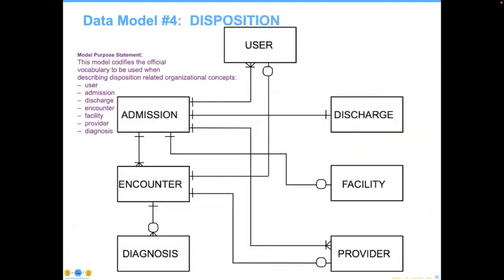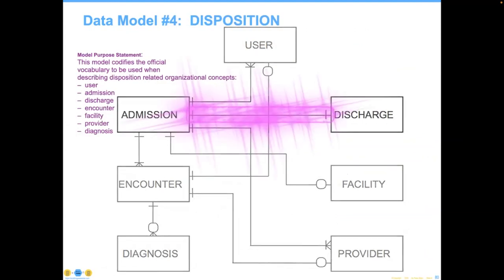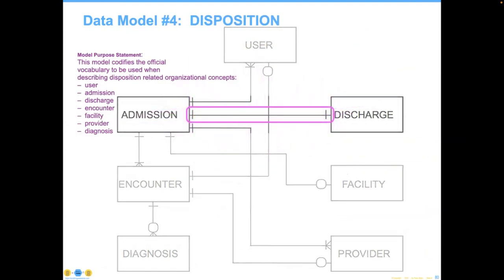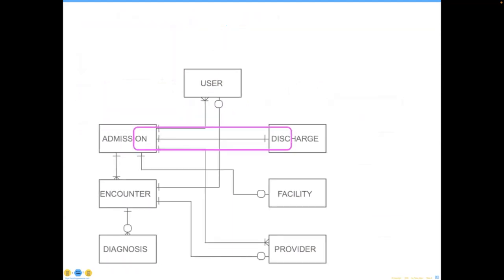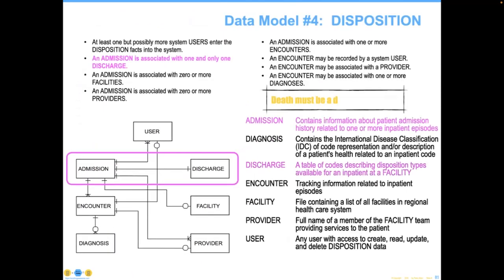Here's a second example: number five — there's nothing in this data model that prevents an automobile from being rented to multiple customers; there's no checkout or status concept. Could that be a conflict later on? It depends on your business model. A third example for a hospital system: there must be a one-to-one correspondence between admission and discharge. Discharge by death must be a disposition code — it was not something they wanted on their documentation, but it turned out to be necessary and proper.